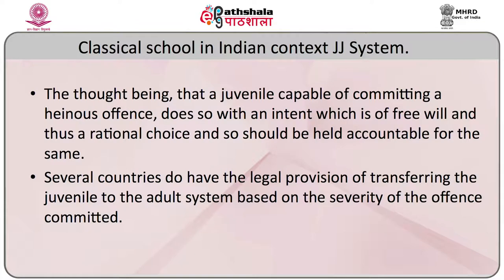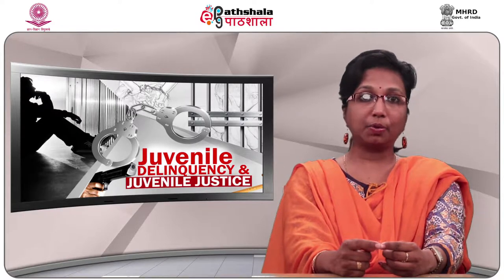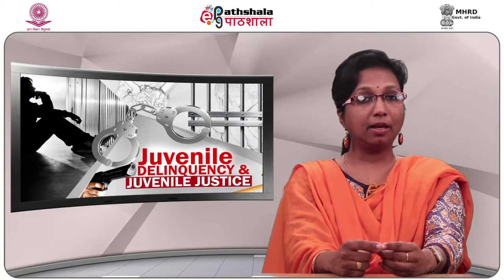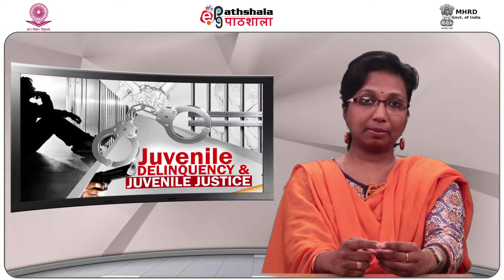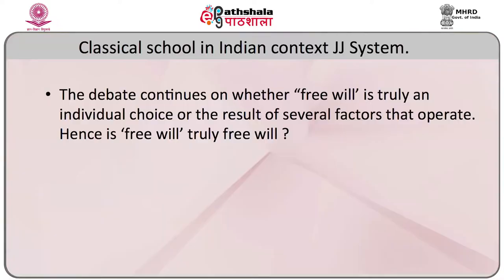In the Indian context, the juvenile justice system is based on the principle of treatment, rehabilitation, and prevention, emphasizing corrections. The debate on the need to treat a juvenile committing a serious offence can be understood from the classical school concept of free will and rational choice — that a juvenile capable of committing a heinous offence does so with intent as a rational choice and should be held accountable. Several countries have legal provisions for transferring juveniles to the adult system based on the severity of the offence. This continues to be a debate on whether free will is truly an individual choice or the result of several factors.